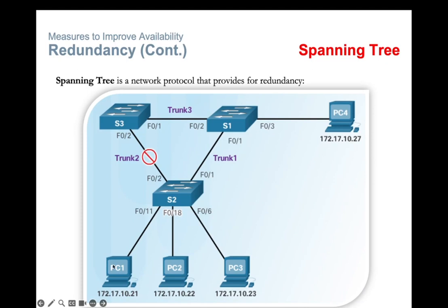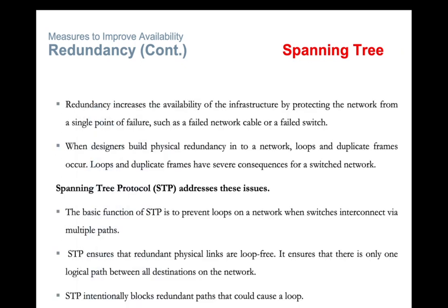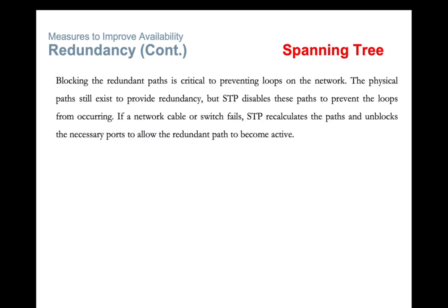If a PC sends data to switch two, it can forward that packet to all its outgoing ports. If packets start circulating within this network, that leads to a loop and duplicates. The next few slides explain this with an example.